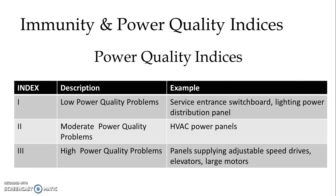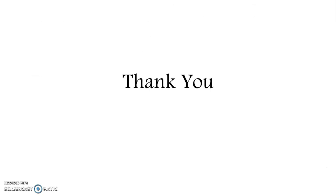The objective of any power quality study is to ensure that the immunity contour is outside the boundaries of the power quality contour. Two methods for solving power quality problems are to either make the power quality contour smaller so that it falls within the immunity contour, or make the immunity contour larger than the power quality contour. Thank you very much for watching my video, keep watching, thank you very much.